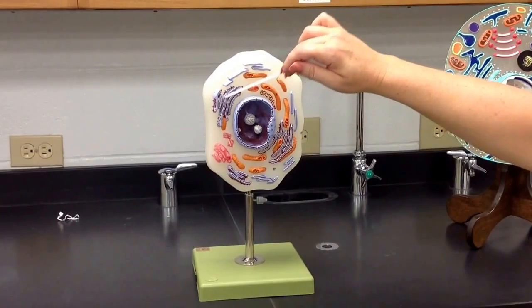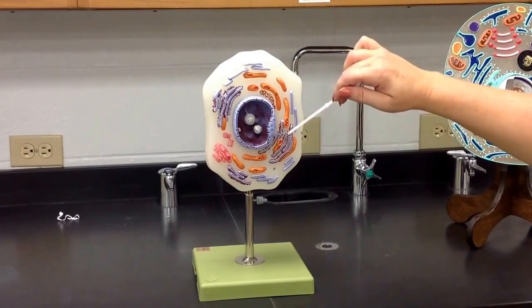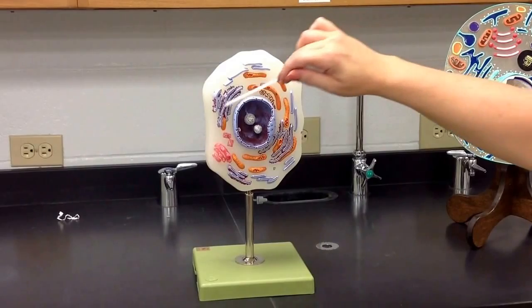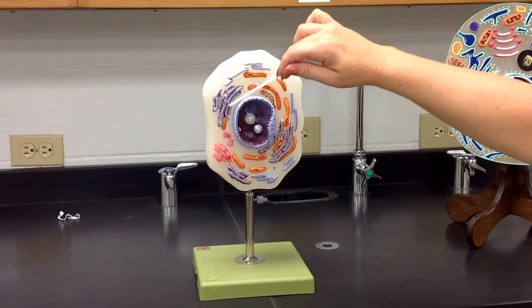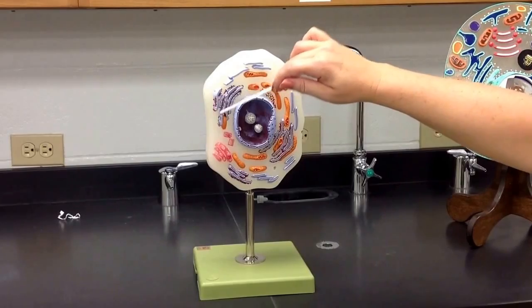Then around here we have our folds of membrane covered with the bumps, so that means that is our rough endoplasmic reticulum, and the bumps are always our ribosomes, regardless of what color they are. It doesn't matter. They are always going to be your ribosomes.